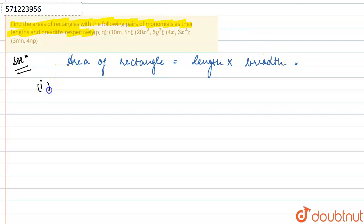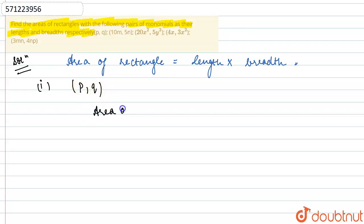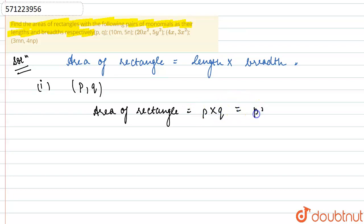In the first part, we have the pair as p comma q. So p is the length and q is the breadth. Therefore, area of rectangle will be equal to p multiplied by q, or simply pq.